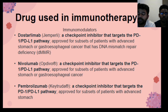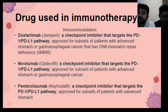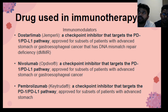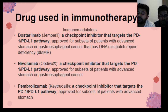First we need to know what checkpoint inhibitors are. Immune checkpoints are a normal part of the immune system. Their role is to prevent an immune response from being so strong that it destroys healthy cells of the body. Checkpoint proteins such as PD-L1, which is present on tumor cells, and PD-1 on T-cells, help keep immune responses in check. The binding of PD-L1 to PD-1 keeps T-cells from killing tumor cells in the body.